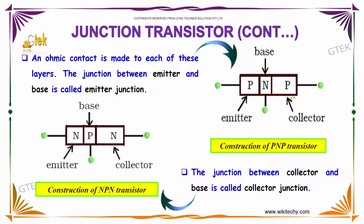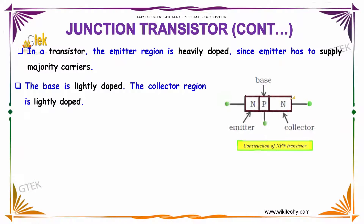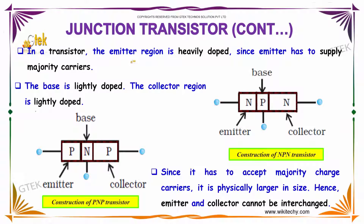In a transistor, the emitter region is heavily doped since the emitter has to supply the majority carriers. The base is lightly doped, and the collector region is also lightly doped.